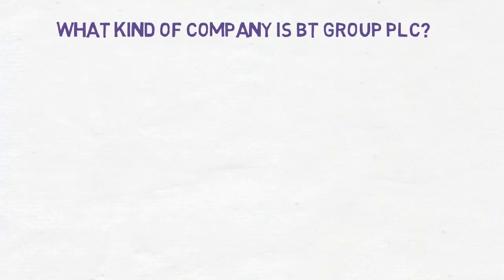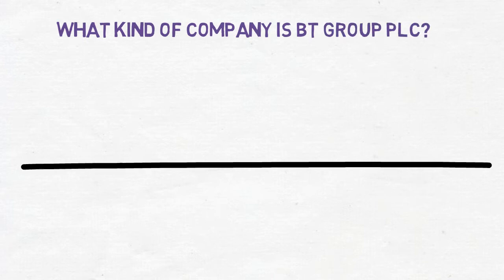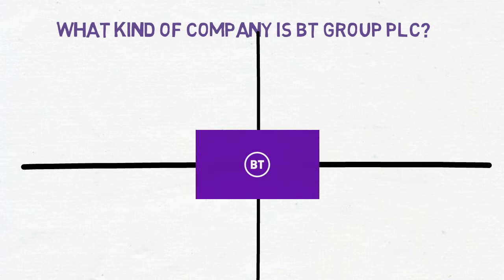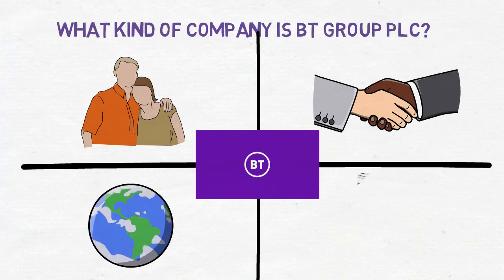So let's get started. What kind of company is BT Group PLC? BT Group PLC provides communications products and services in the United Kingdom and internationally. It operates in four segments: consumer, enterprise, global services, and open reach.